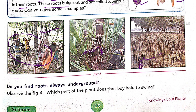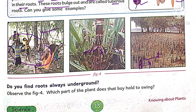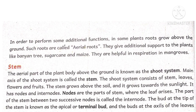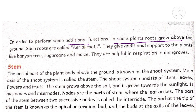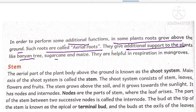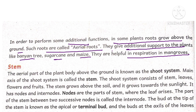In mangrove plants, roots generally grow inside the soil, but due to lack of oxygen, these roots grow above the ground. These roots have small pores through which they absorb oxygen from the atmosphere, allowing the plant to respire — so these are called respiratory roots. Roots that grow above ground to perform additional functions are called aerial roots. They give additional support to plants like banyan tree, sugarcane, and maize, and also help in respiration in mangroves.